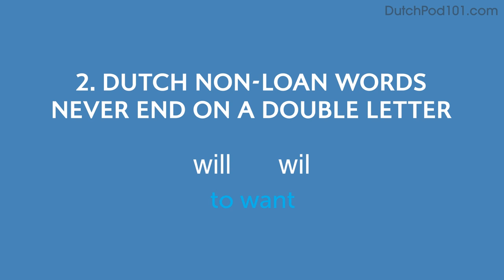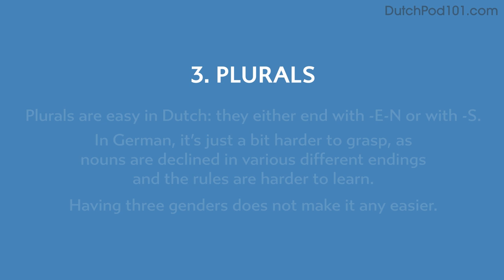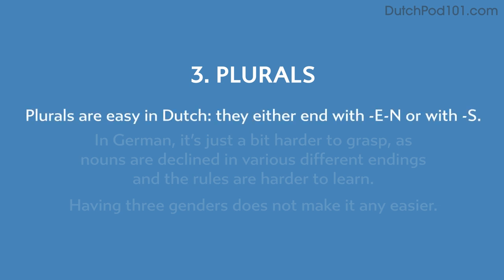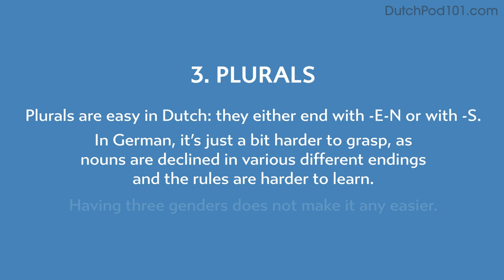German, on the other hand, capitalizes each and every noun. A second difference is that in Dutch, non-loan words never end with a double letter. For example, the verb to want in German is spelled W-I-L-L, while in Dutch it's spelled W-I-L — only one L. The third difference is about plurals. Plurals are easy in Dutch: they either end in -en or -s. In German it's harder, as nouns are declined with various different endings and having three genders does not make it any easier.